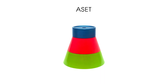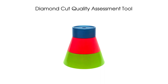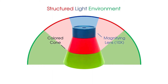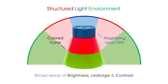The Asset is a diamond cut quality assessment tool. Its cone and magnifying lens create a structured light environment which, when placed over a diamond, shows brightness, leakage, and contrast.